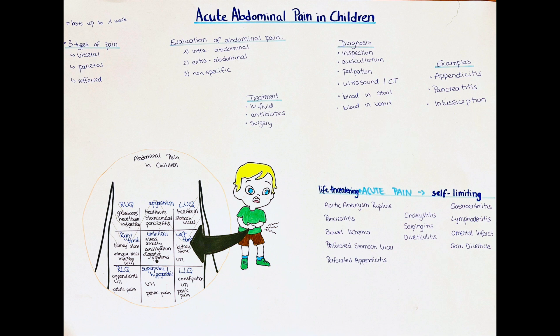In cases where vascular compromise, malrotation and volvulus, incarcerated hernia, intussusception, or ischemic bowel obstruction is suspected, the patient should be operated on immediately. In cases of intestinal obstruction, non-perforated appendicitis, or tumors, the patient should be operated on soon. That concludes this video on acute abdominal pain in pediatric patients; the video on chronic pain will follow. Thank you very much, and please subscribe if you found this helpful.